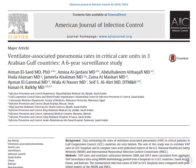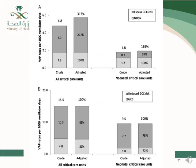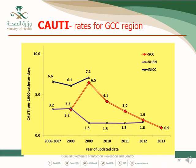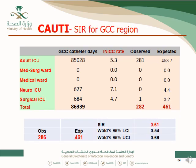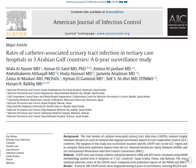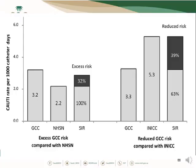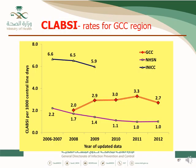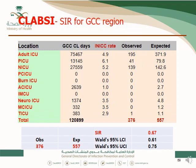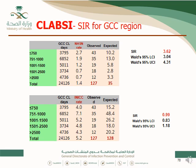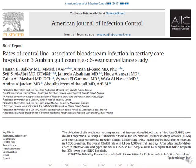We created the GCC benchmark. For the GCC benchmark for VAP, we created an SIR compared to NHSN. This has been published in the American Journal of Infection Control. If you look at this graph, the upper part is comparing to NHSN, and we repeated the same for VAP. When we compared this to INIC, the SIR was similarly published in the American Journal of Infection Control. The last paper compares CLABSI data to NHSN and INIC, showing CLABSI SIR rates for GCC countries.